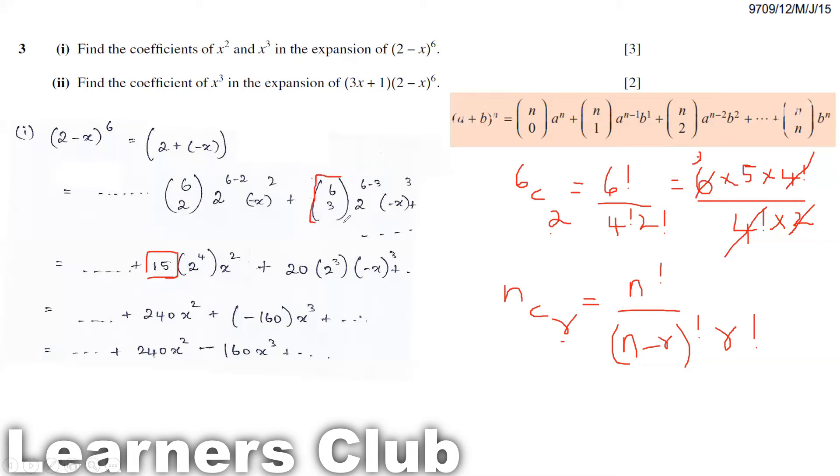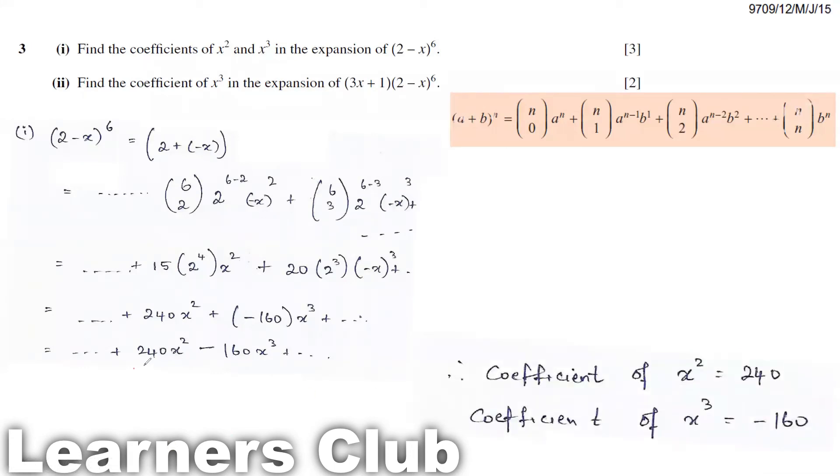The same way you can find 6C3, or you can use the calculator. So it's 20 times 2 to the power 4 is 16, times minus x squared, giving 240 x squared. Then 20 times 8 times minus x cube will give you minus 160 x cubed. So from here we understand that the coefficient of x squared is 240. The coefficient of x cubed is minus 160. This completes the first part of question number 3.